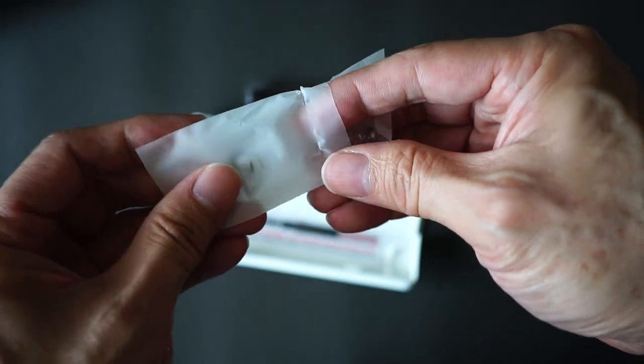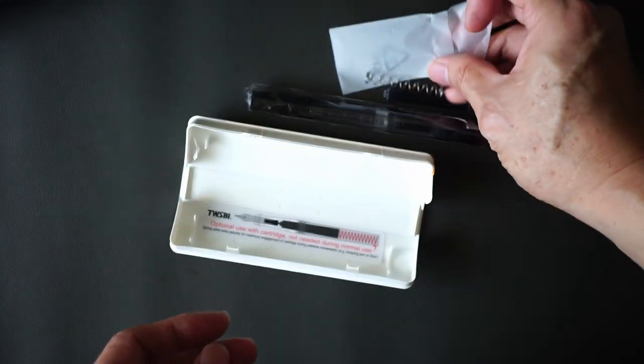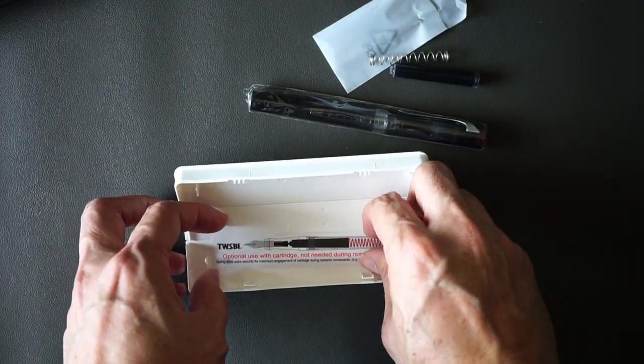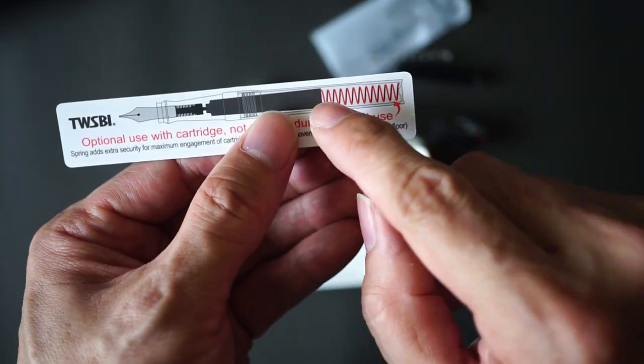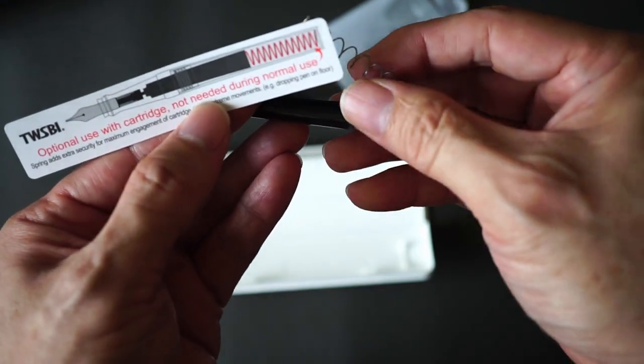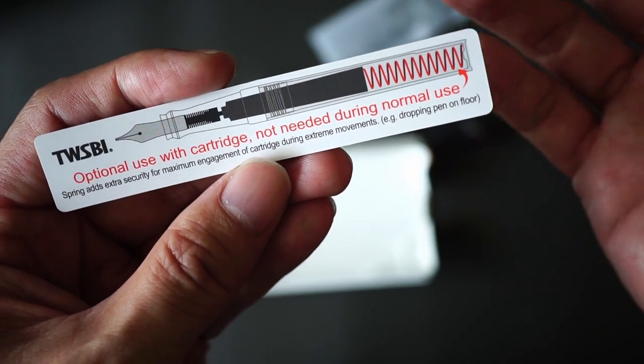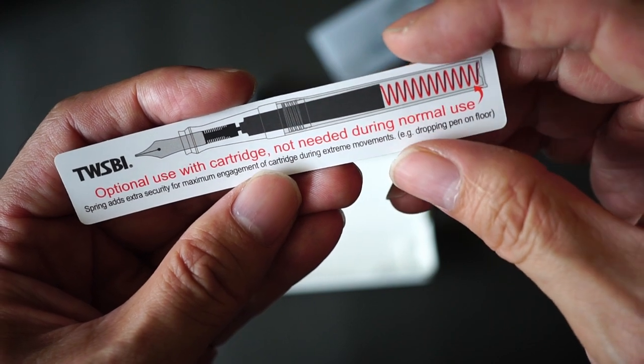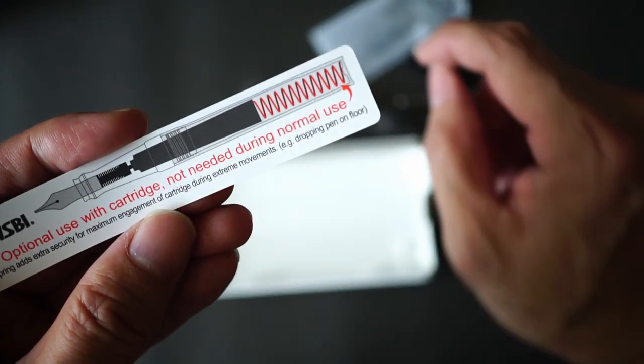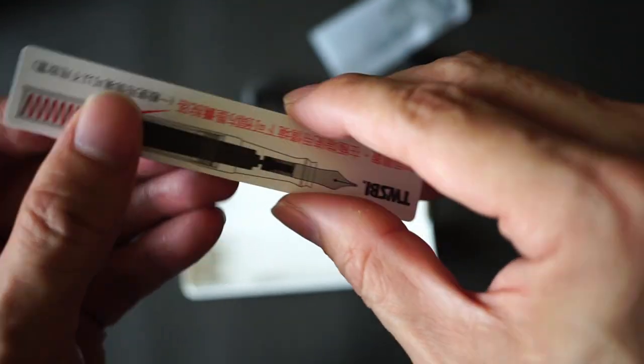It's kind of an interesting design for a cartridge. I'm not quite sure, this is probably the point where you would puncture this hole to get the ink to start flowing. They give you a spring which I think is for use with the cartridge where you put it like this. It says that the spring adds extra security for engagement of the cartridge. I would be worried with that approach because it might mean that the connection between the feed and the cartridge is not very secure, but we'll take a look at that later on.